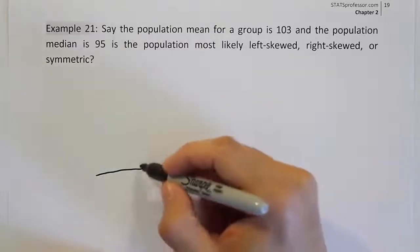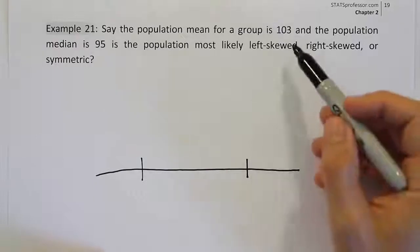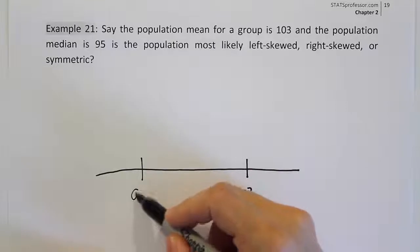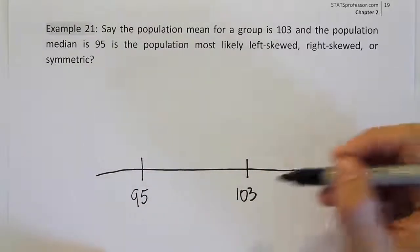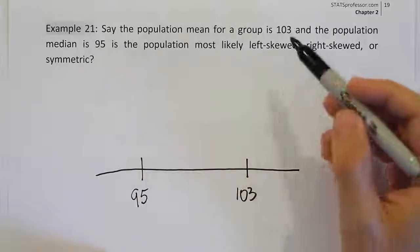And on that number line, you're going to label the two numbers that have been given to you. So we're given 103 and 95. I'm going to clearly put 103 further to the right and 95 on the left because you remember that the big number always goes to the right of the smaller number.